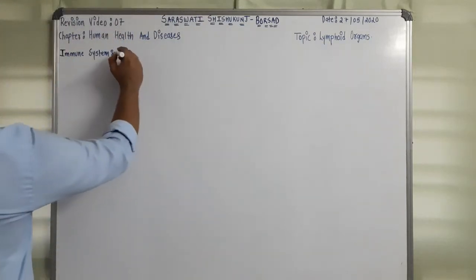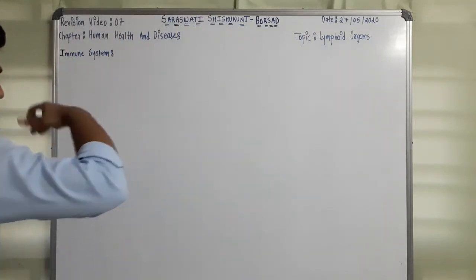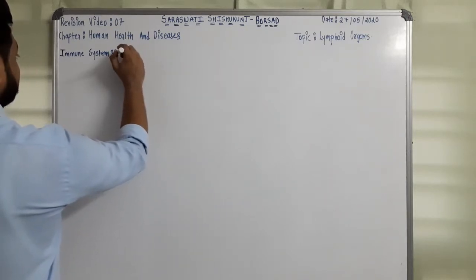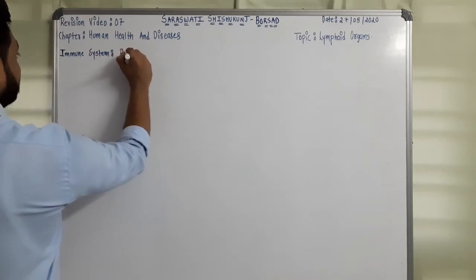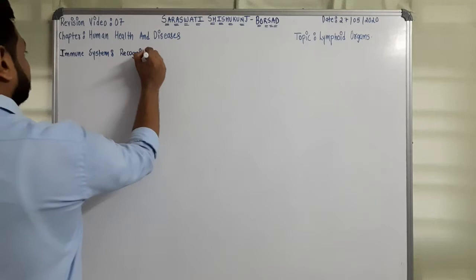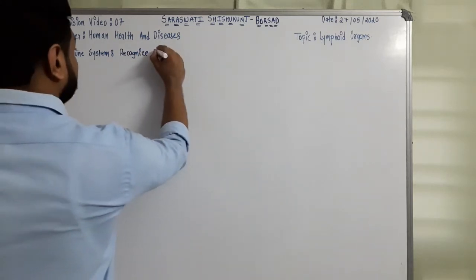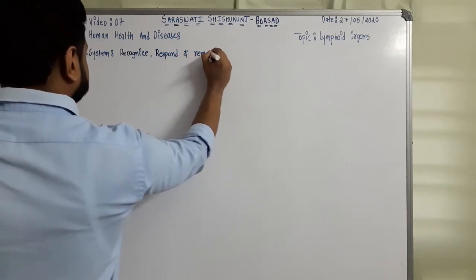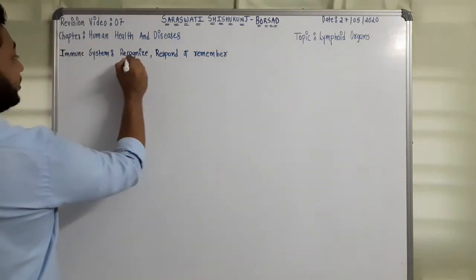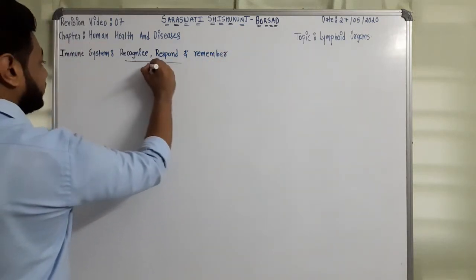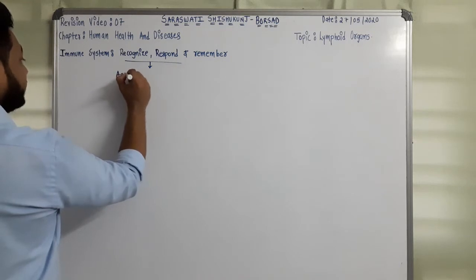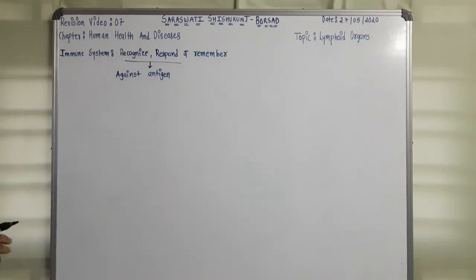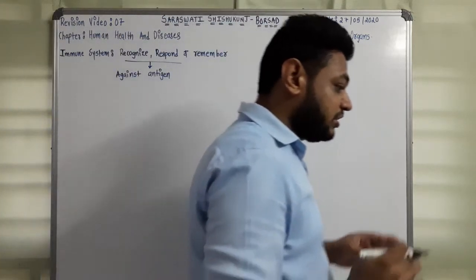The immune system is related to action against pathogen or antigen. So, immune system recognizes, responds, and remembers — recognize and respond against antigen, that can be pathogen. This is the work of the immune system.